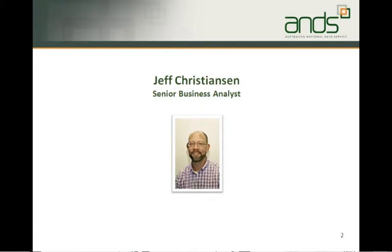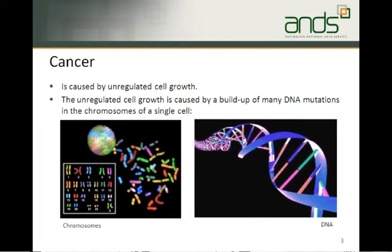What I'm actually going to start the talk with is not data but science, or biology. This project is based around cancer research. Cancer is caused effectively by unregulated cell growth — where a cell loses inhibition and grows out of control, eventually forming a tumour. What actually causes this unregulated cell growth is the build-up of many DNA mutations in the chromosomes of a single cell.